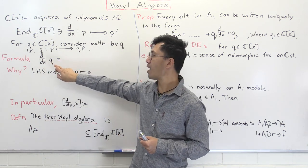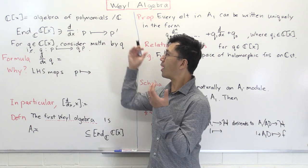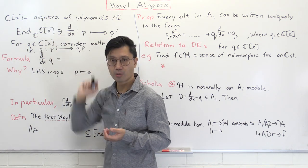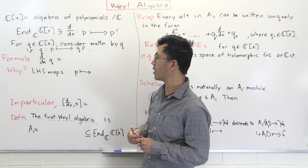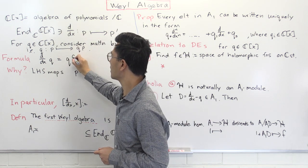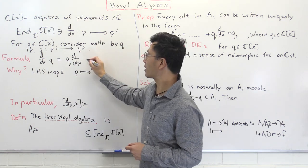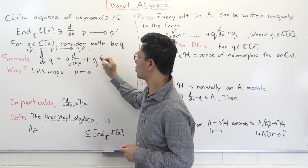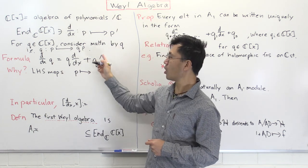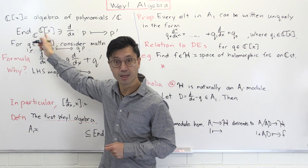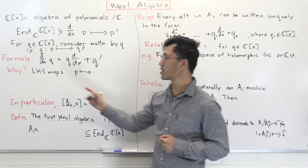We multiply d/dx and q, and the interesting formula we get is that this ring is non-commutative — and in fact this is an example which shows the non-commutativity of this ring. Because d/dx · q is not equal to q · d/dx; rather it equals q · d/dx plus an extra term, and that extra term is the derivative of q. So remember, q' is also a polynomial, which means it corresponds to some element in this endomorphism ring.